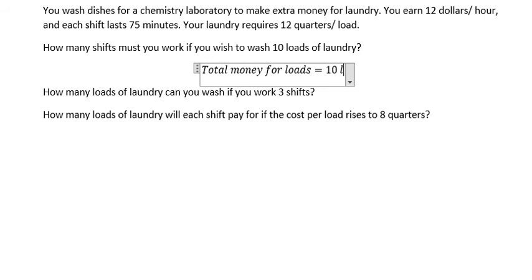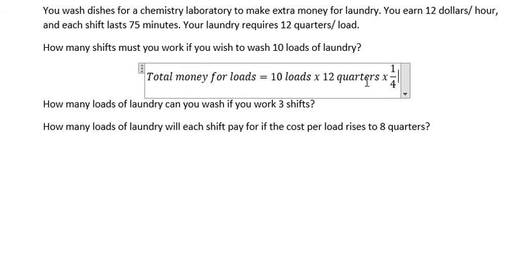So we have 10 loads multiplied by 12 quarters, because in one load you will require 12 quarters. Then in each quarter you have 1 over 4, because 1 quarter is just 1 over 4 of the US dollar. And we have the total money, it's about $30.